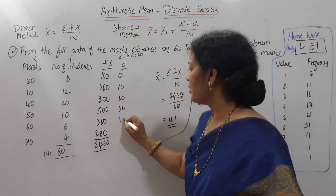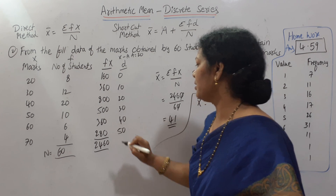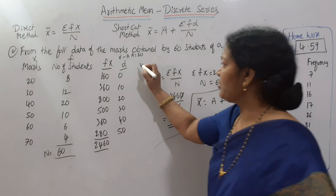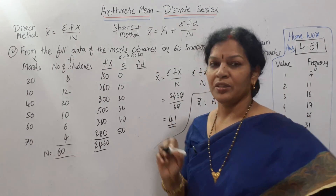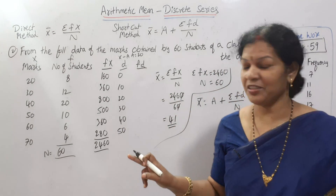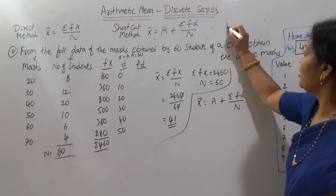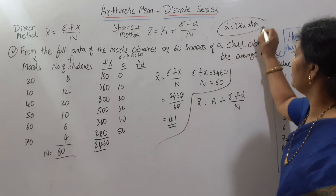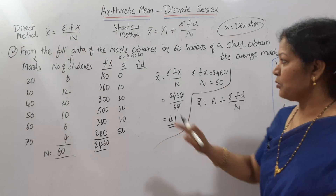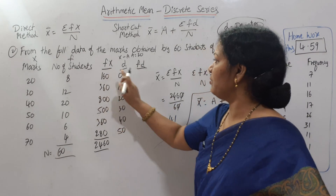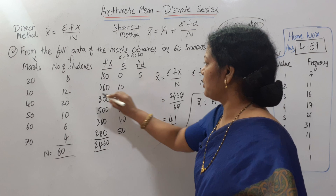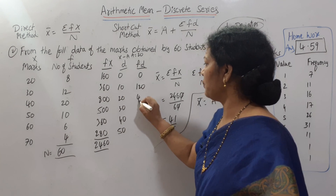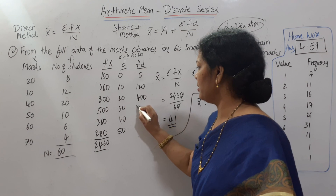Now we need F × D, meaning frequency into deviation. D means deviation — remember this word. So multiply each frequency by its corresponding deviation to get the FD column.